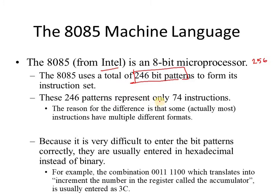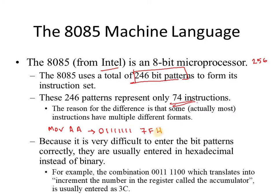These 246 patterns represent only 74 instructions. The reason for this difference is that some instructions have multiple different formats. For example, the instruction MOV A,A has opcode 01111111, which is 7FH in hexadecimal — where A is both source and destination.